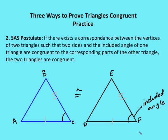In this example, I have AC congruent to DF and BC congruent to EF, and the included angle C congruent to angle F. So by the SAS postulate, triangle ABC is congruent to triangle DEF — and remember, the order is important. I could also say triangle ACB is congruent to triangle DFE, but I have to list the corresponding parts of the triangles in the relative order that they are congruent.